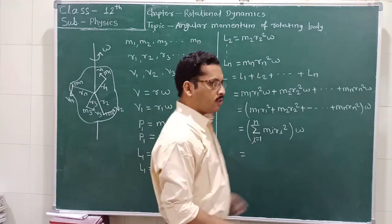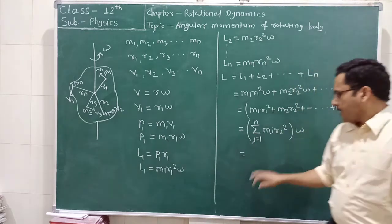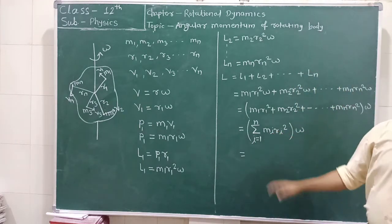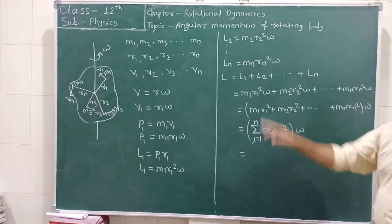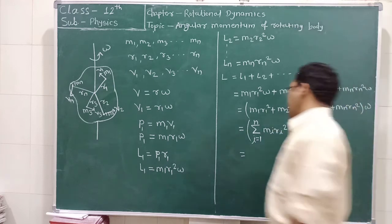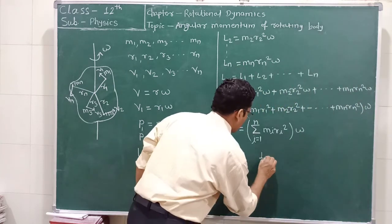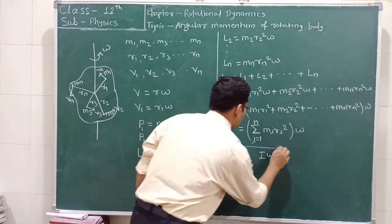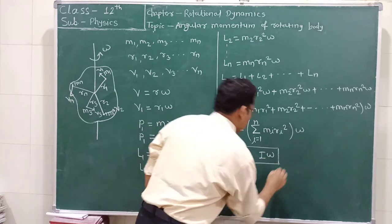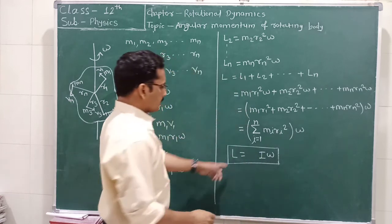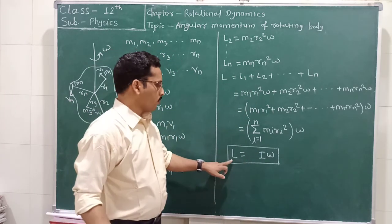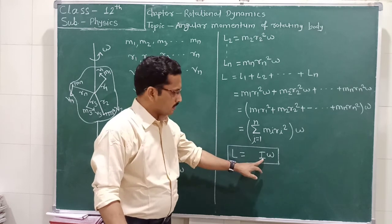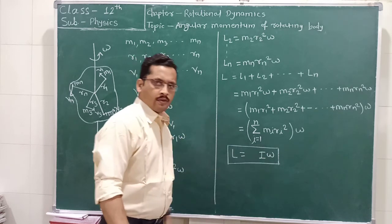We know that the term in the bracket — the summation of Mi Ri squared — is nothing but the moment of inertia I of the body. Therefore, we can write the total angular momentum as L equals I multiplied by omega. This is the equation for angular momentum in terms of moment of inertia and angular velocity.